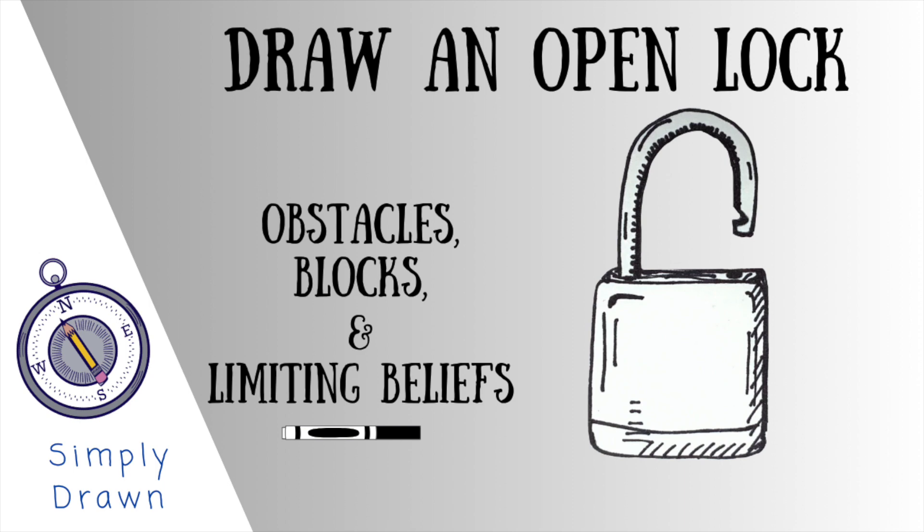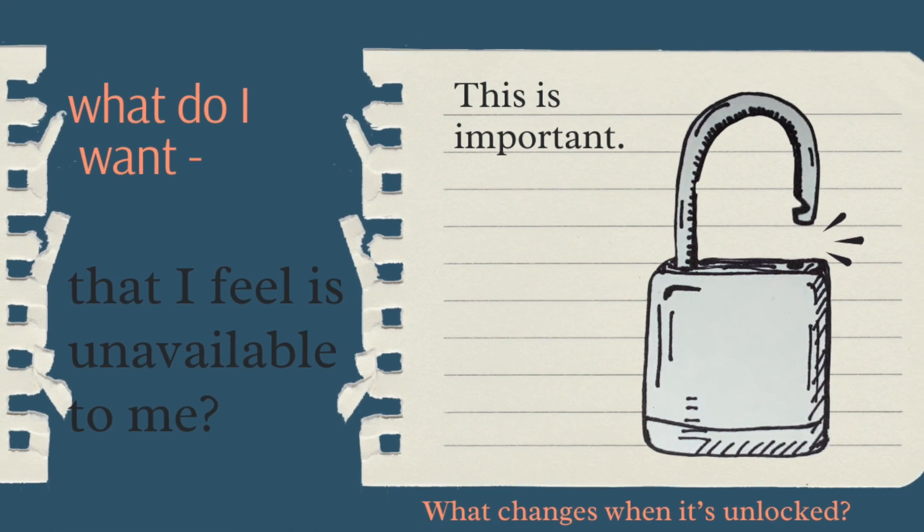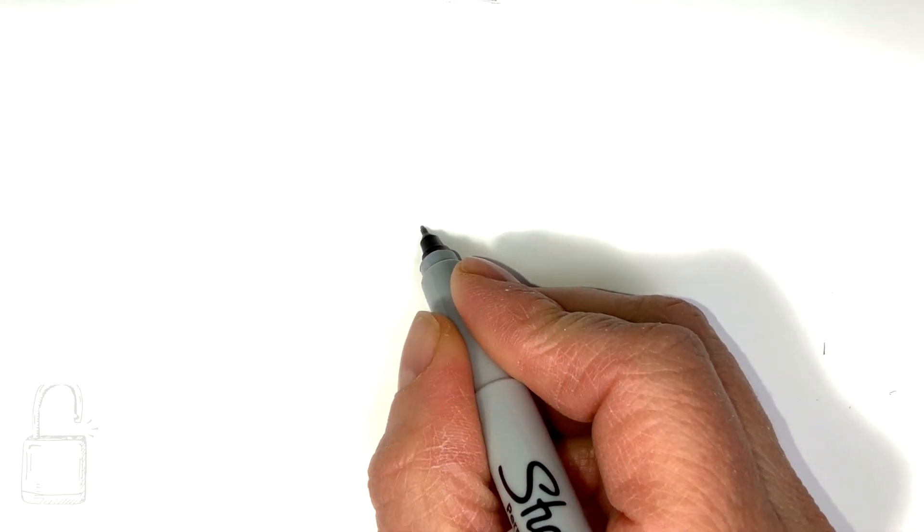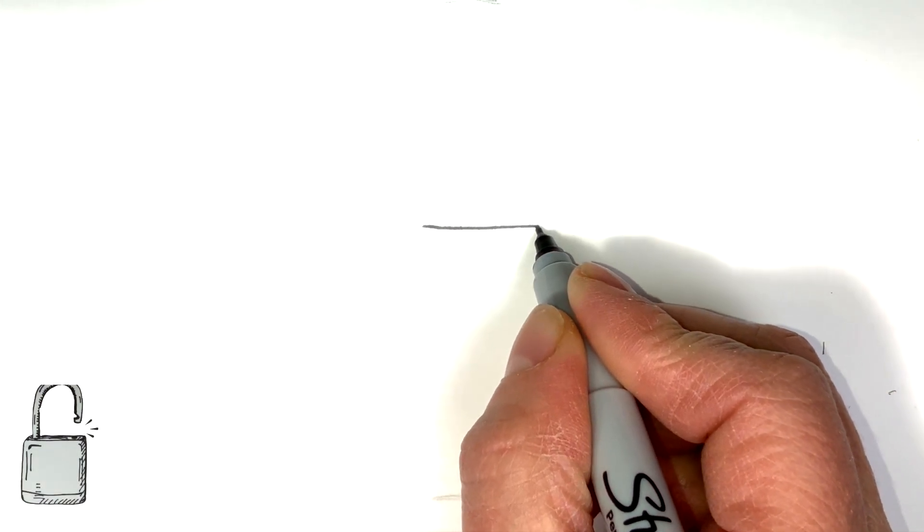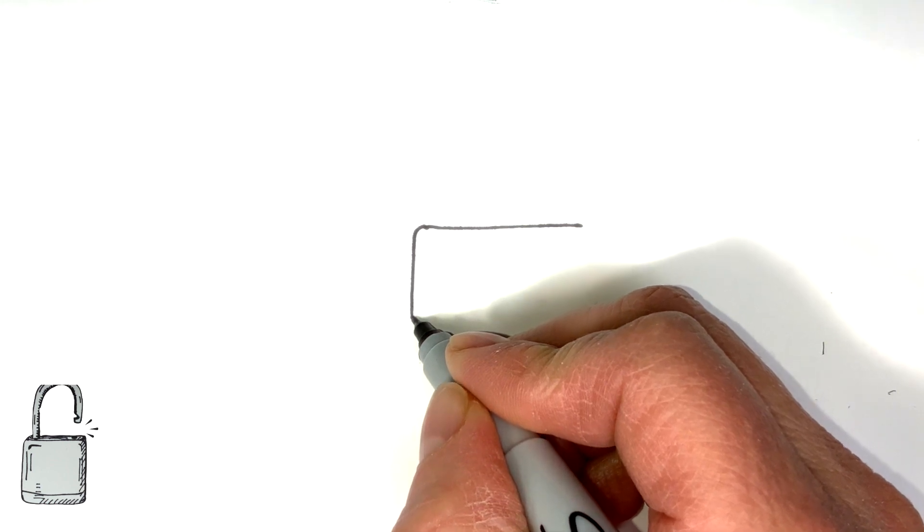Simply drawn here and today we are opening that lock that we drew. So remember we're asking what do you want that feels unavailable to you, and today we are actually symbolically opening the lock as if you had the key like in the other video and you have opened it. What will change?